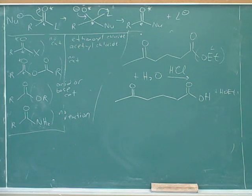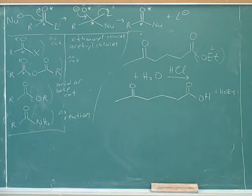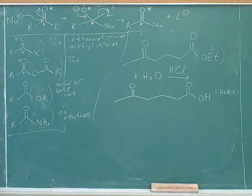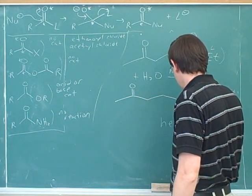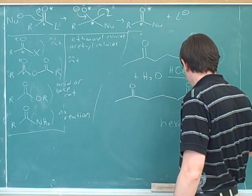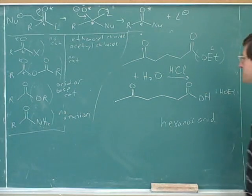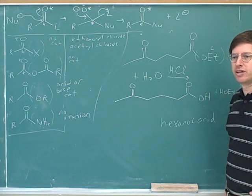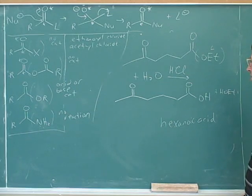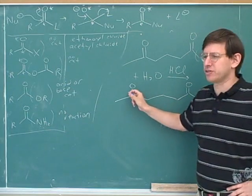I would know how to name it without the carbonyl group — just the hexanoic acid part. How do we treat the ketone? That's the question. How did you know that the carboxylic acid gets the suffix and not the ketone? Because it's more oxidized — this has three bonds to oxygen, but this only has two.